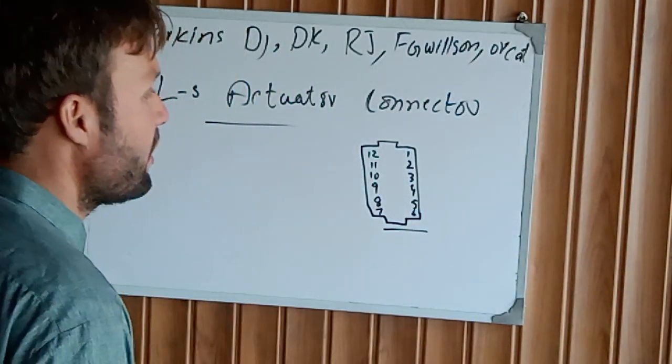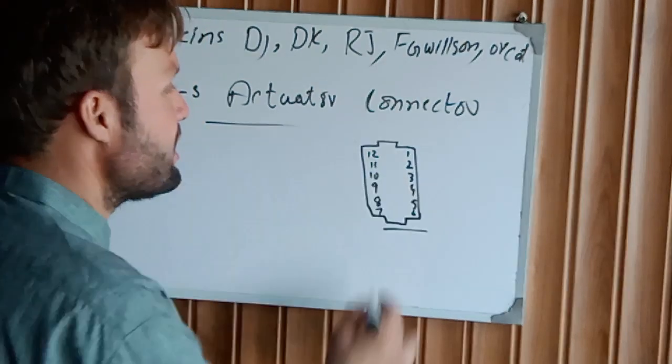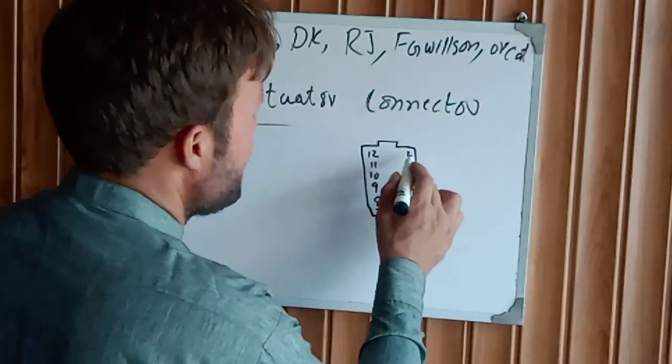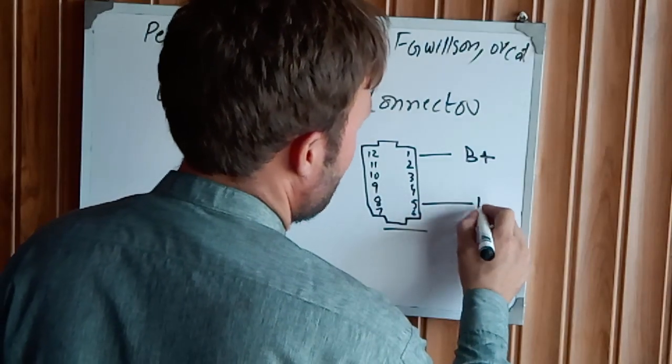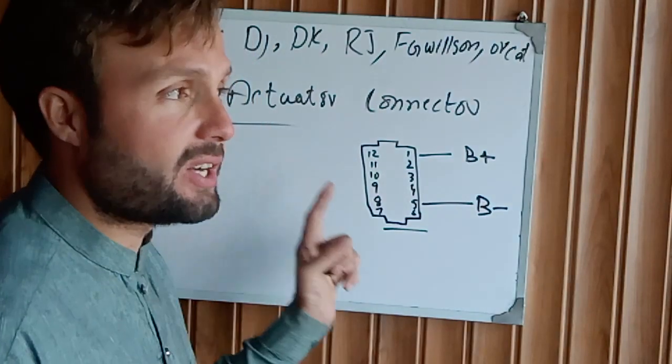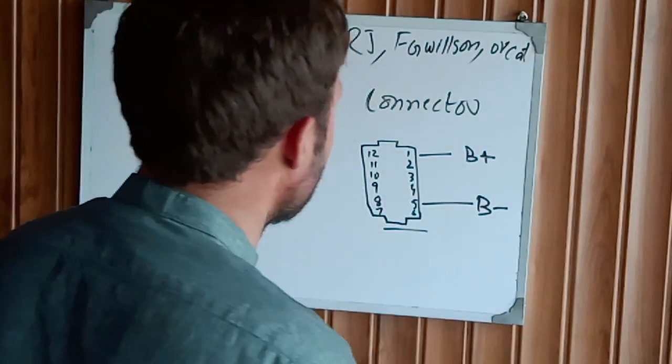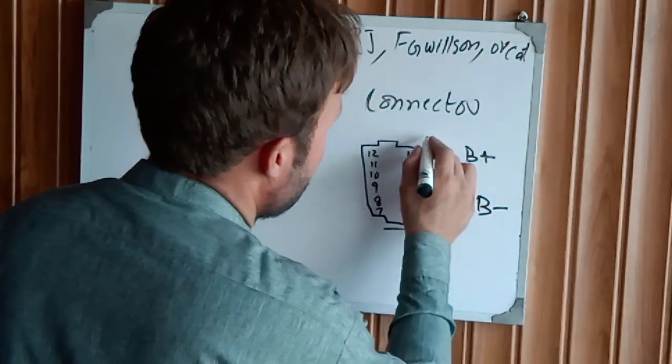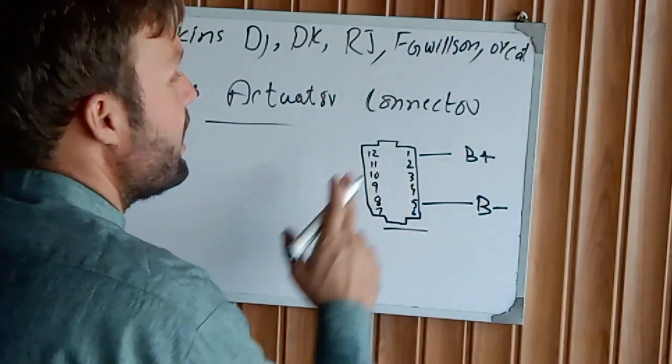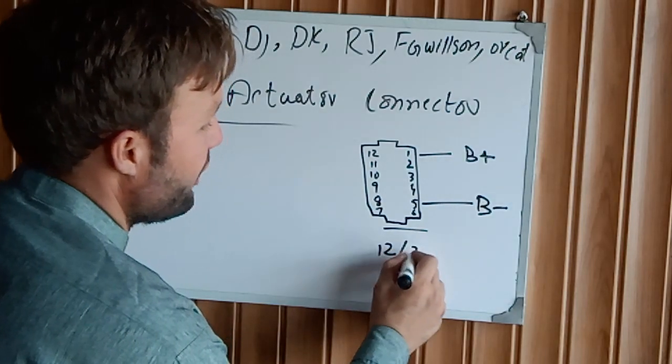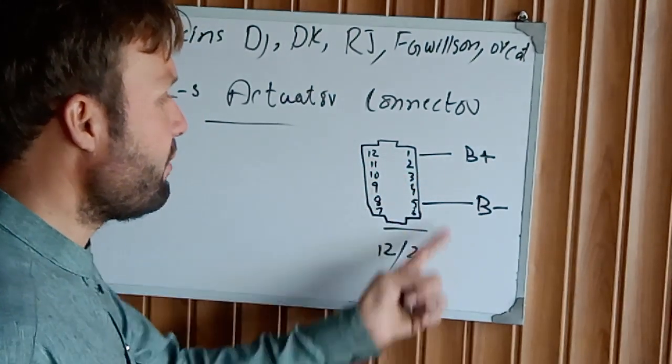This actuator has a small connector grip with 12 wires - some are empty, some are working. Pin number 1 is battery positive supply and pin number 5 is battery negative supply. This actuator first needs battery supply for energizing. Check the supply on pin 1 and pin 5 - you should be getting 12 volt or 24 volt between these two pins.